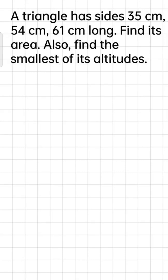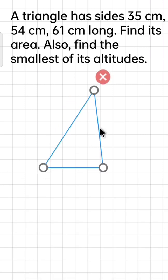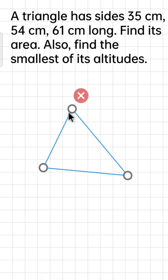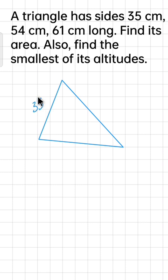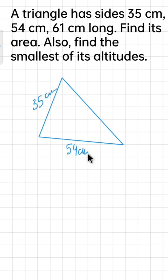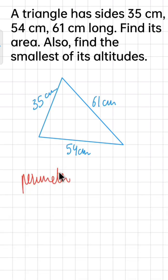A triangle has sides 35 centimeters, 54 centimeters, and 61 centimeters long. We have to find its area and the smallest of its altitudes. First, I'm going to draw a triangle with these dimensions. To find the area when all sides are given, we should use Heron's formula, and for that we will need to find the perimeter first.